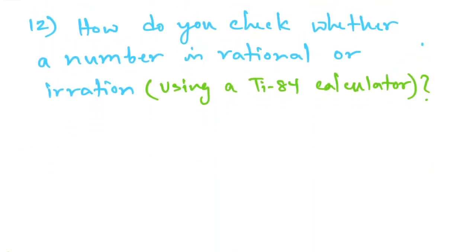Let's take a look at question number 12: how do you check whether a number is rational or irrational using a TI-84 calculator? For example, let's say they give you the number 0.25 and you want to find out whether 0.25 is rational. How can you find that out using the TI-84 calculator? I'll give you 10 seconds to think about the problem.